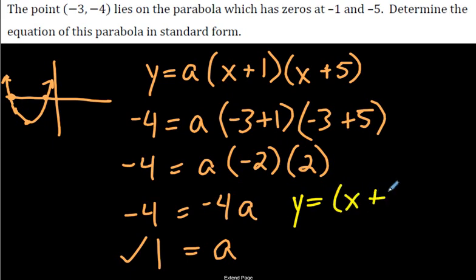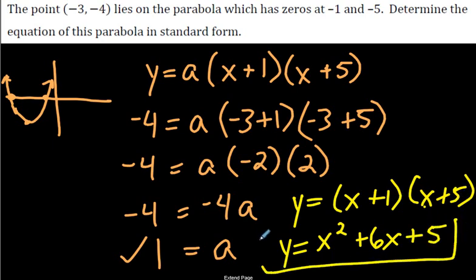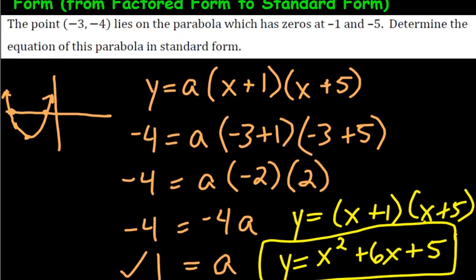Since a = 1, we just write y = (x + 1)(x + 5) — no need to write the invisible 1. Multiplying out: x squared, plus 5x, plus x, plus 5 — combining like terms: x squared plus 6x plus 5. And there we have it — that is our standard form.